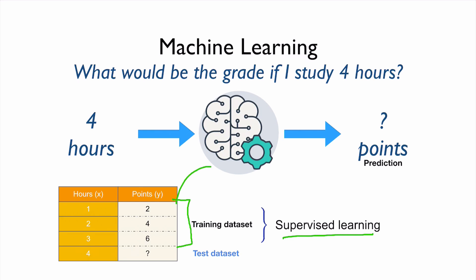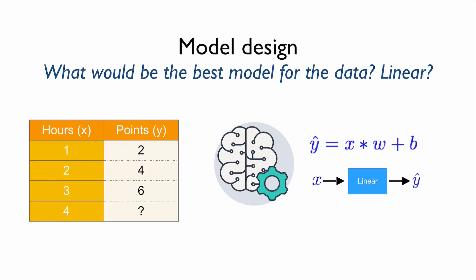We call this type of machine learning supervised learning because we are providing the data set with answers — we train and supervise the machine learning process. The first task we want to do here is to design our model, which takes input X and predicts Y.